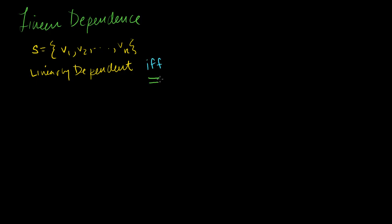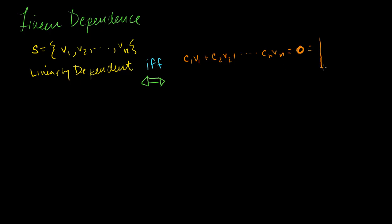If and only if I can find a set of constants c1 times v1, taking a linear combination of my vectors all the way to cn times vn, that satisfies the equation that I can create the zero vector. Sometimes it's just written as a bold 0. We don't know the dimensionality of this vector — it would be a bunch of zeros — but you get the idea.